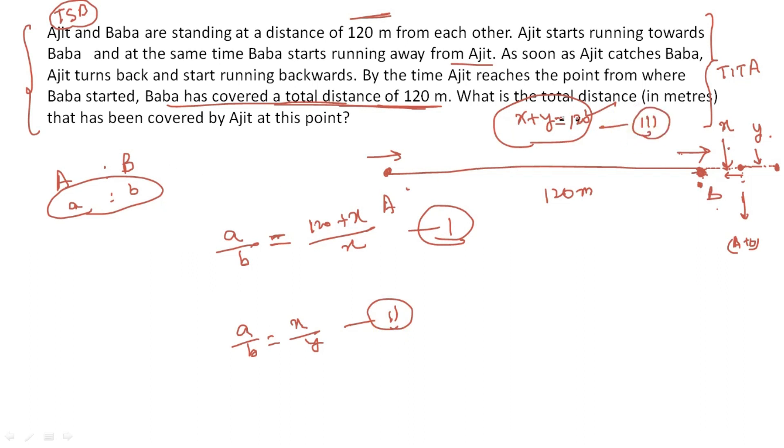Now using these three, I have to solve. What is the total distance covered by Ajit at this point? Ajit has covered 120 so far, then went here to catch Baba, then returned to Baba's starting point, which is given. Now if I take out y from here, I know this is nothing but 120 minus x.